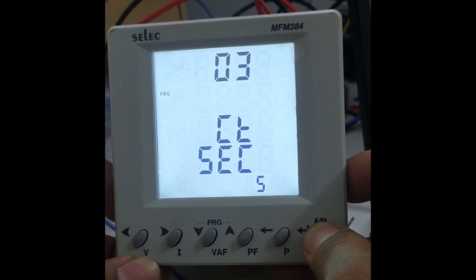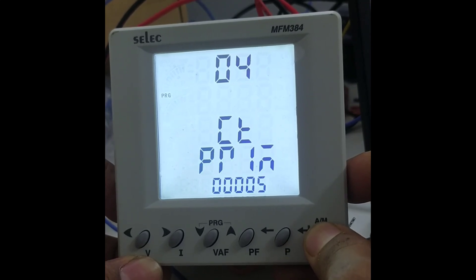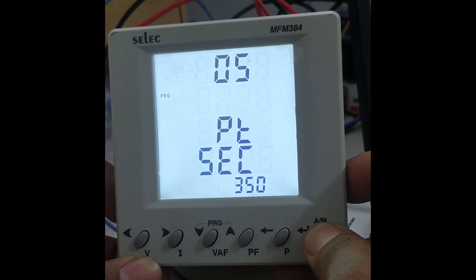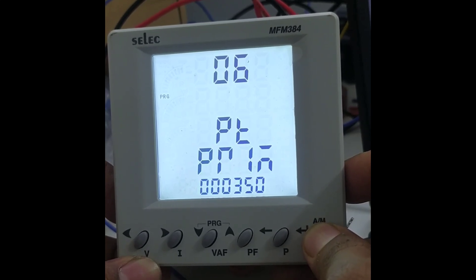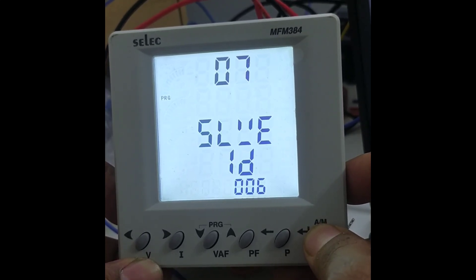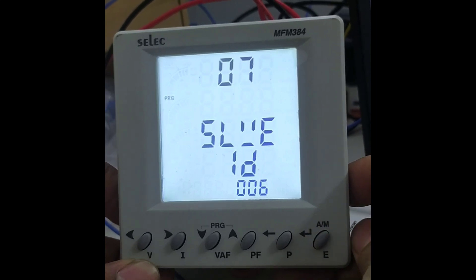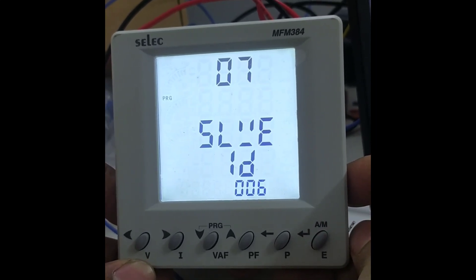Next is CT secondary, press enter. Next is PT primary, press enter. PT secondary, press enter, PT primary again showing, press enter. Next is slave ID for this meter. I have set the slave ID to 6.